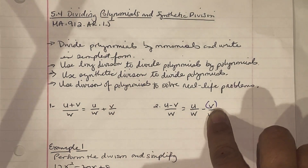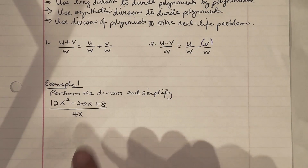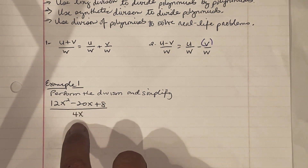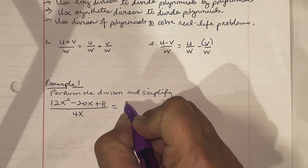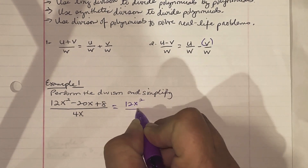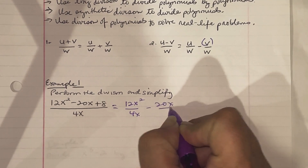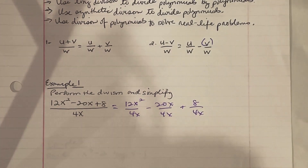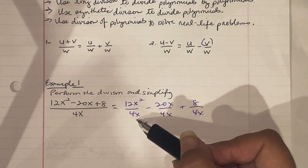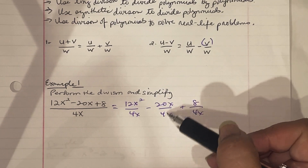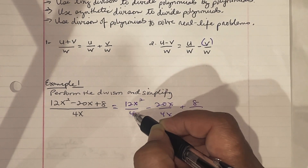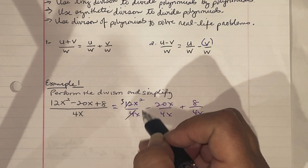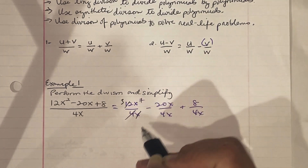Example 1: Perform the division and simplify. We have 12x squared minus 20x plus 8, all over 4x. We simplify by writing each term individually over the monomial: 12x squared over 4x, minus 20x over 4x, plus 8 over 4x. For the first term, 4 goes into 12 three times, and x squared over x gives x to the first power, so the first part is 3x.